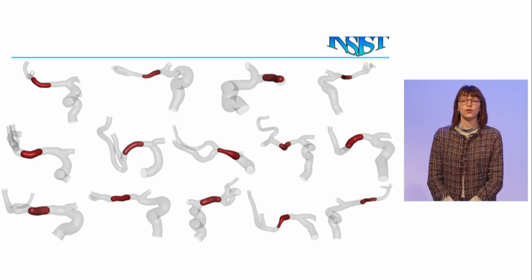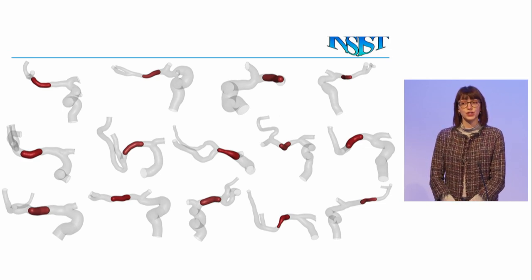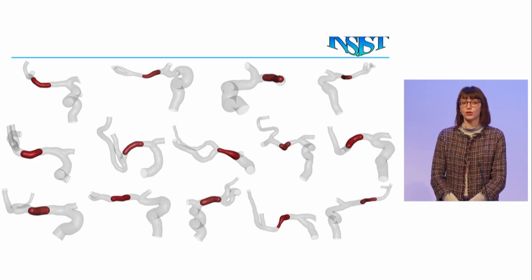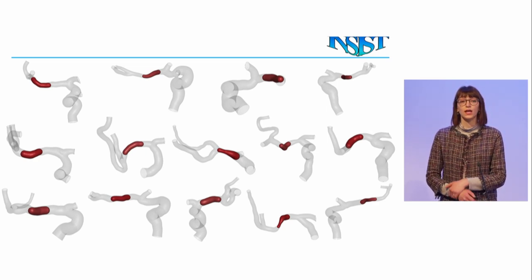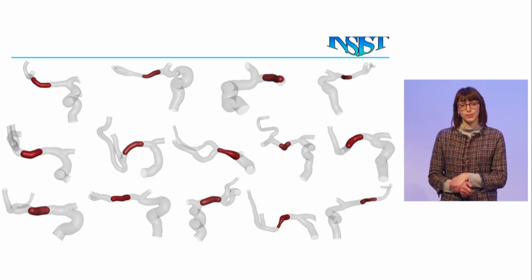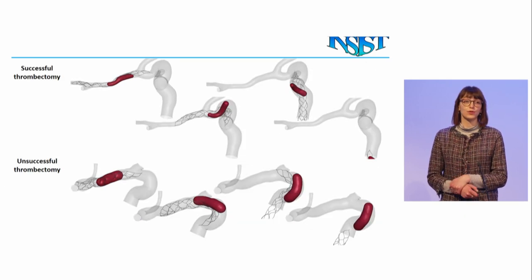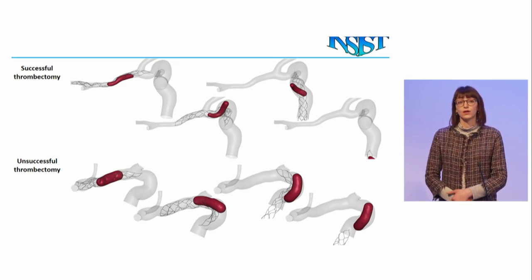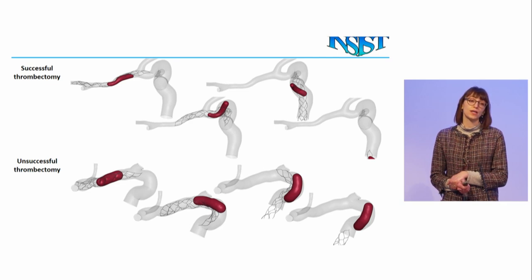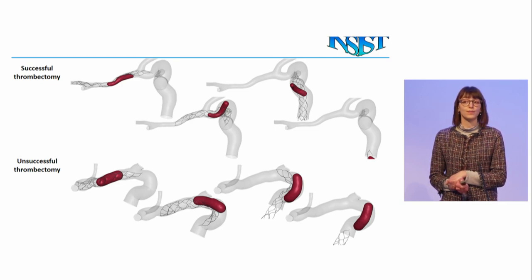This is an overview of different patients with different vessel morphologies and characteristics, different clot properties and locations, for whom we perform the same thrombectomy procedure. For example, here with a successful outcome because the clots reach the end of the vessel, and also with an unsuccessful outcome because the clots remain trapped in the vessel.